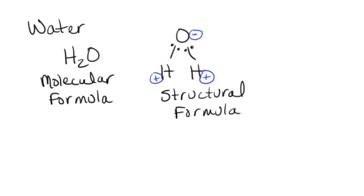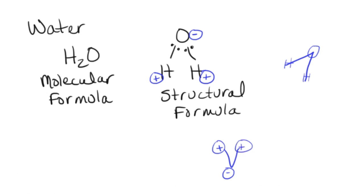If we draw water molecules quickly, we often draw them as a little V because they are bent molecules. The pointed end represents the oxygen end, and the other ends represent the hydrogens. When representing water molecules this way, the pointy end is the negative area, and the two other ends are the positives.